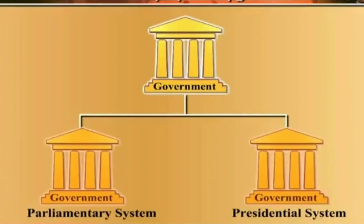There are two main types of government systems that are followed: the parliamentary system and the presidential system.